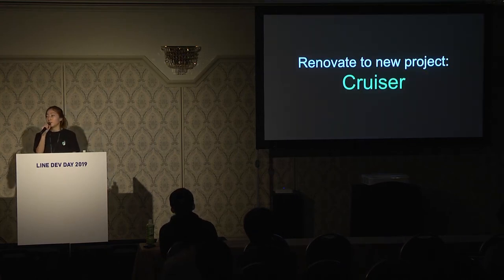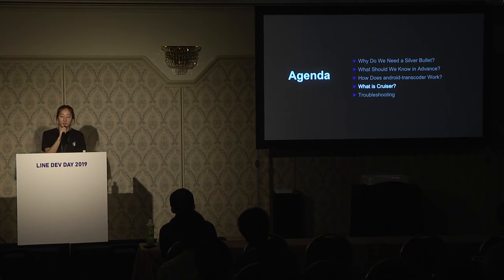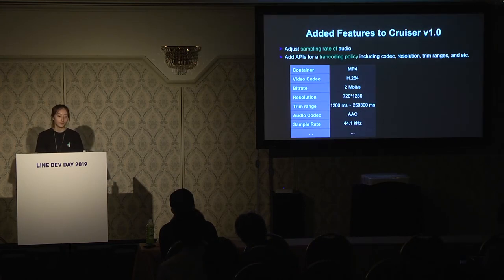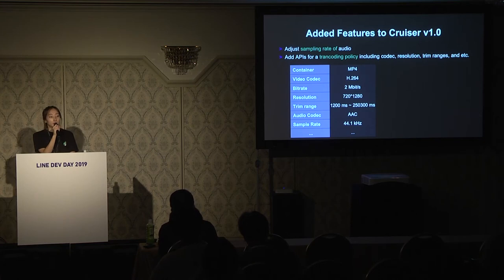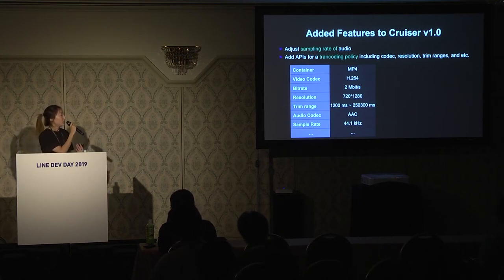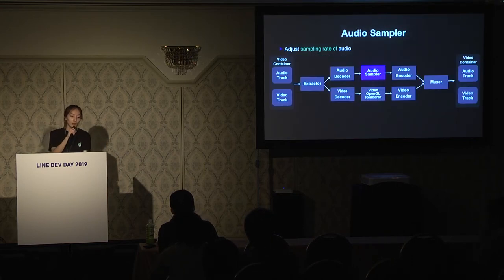So I decided to renovate Android Transcoder into a new project called Cruiser — named after my best friend who cheers me up after night work. The first version of Cruiser was mainly about audio sampling. I extended Android Transcoder to adjust the sample rate of audio, and added several APIs for transcoding policy. The transcoding policy includes parameters such as codec, bitrate, resolution, trim range, and so on.